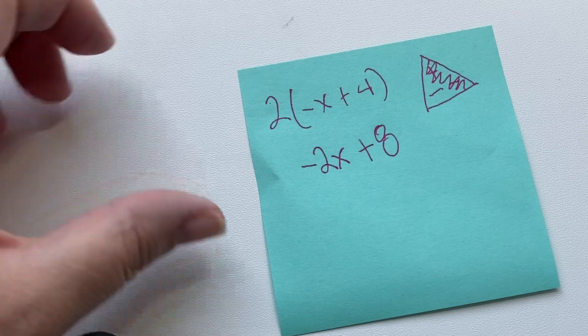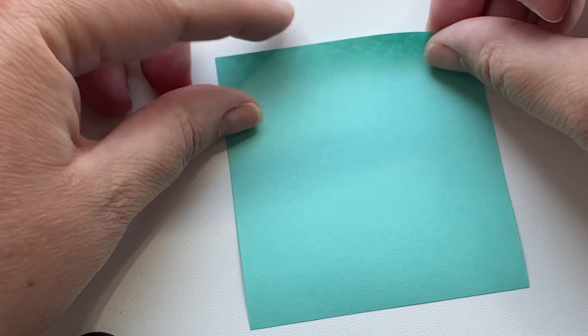Today, we're going to talk about how to deal with negatives on the outside of the parentheses. So let's do a couple of examples.